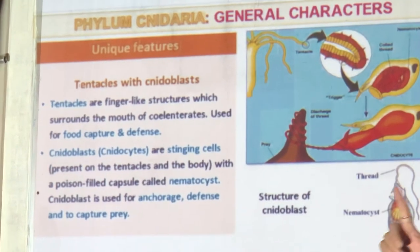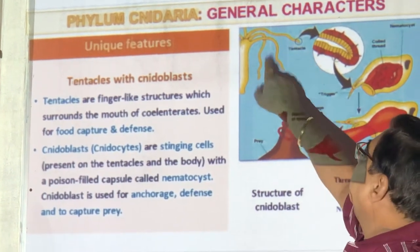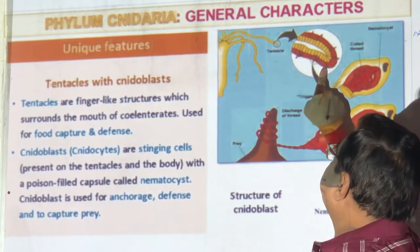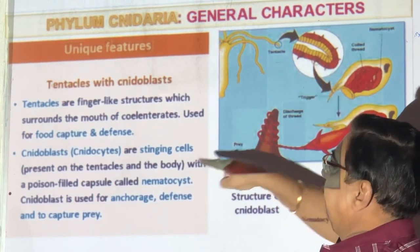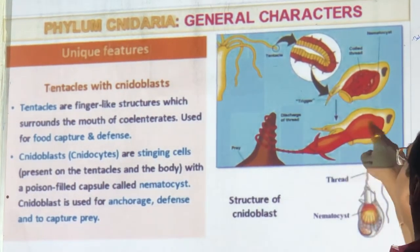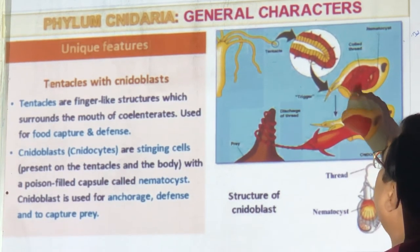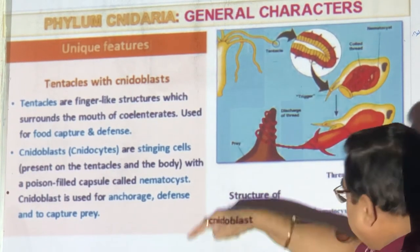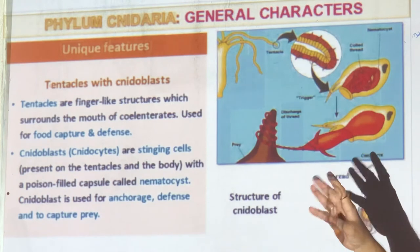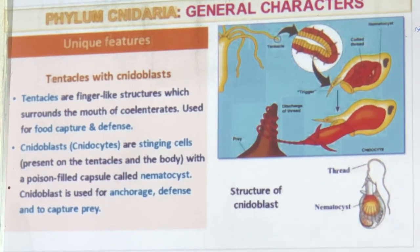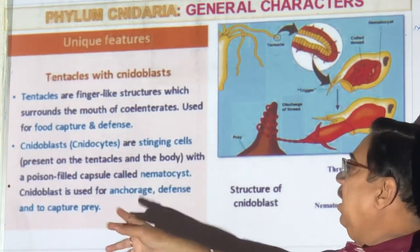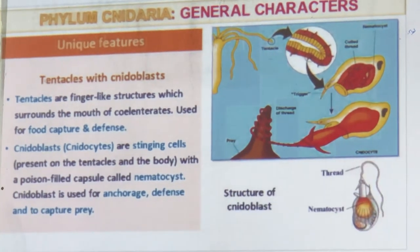The unique feature of Cnidaria is tentacles surrounding the mouth, which have stinging cells called cnidocytes (or cnidoblasts — blast means young cells, cyte means fully mature cells). They have a poison-filled capsule with a lasso inside. When you touch it, the sting is thrown out, wraps around the fish, and numbs it before it is gobbled into the body. Cnidocytes are used for anchorage, defense, and capturing food.